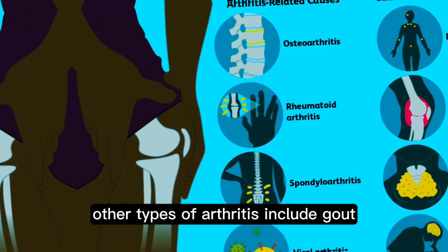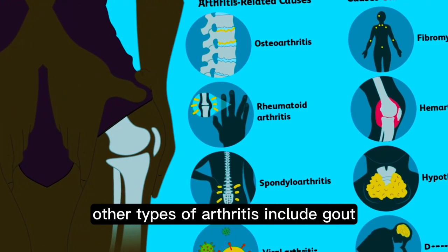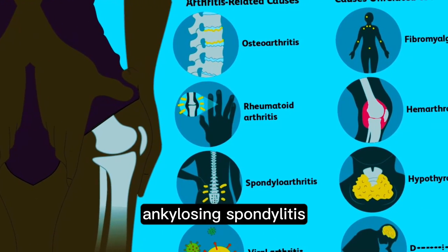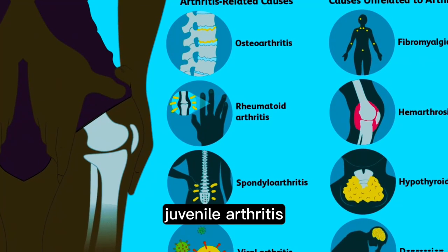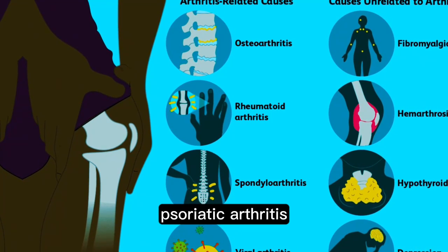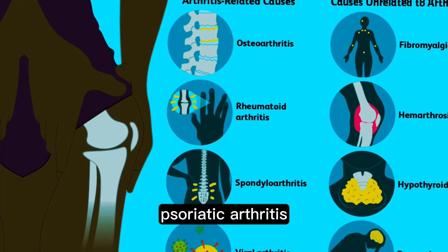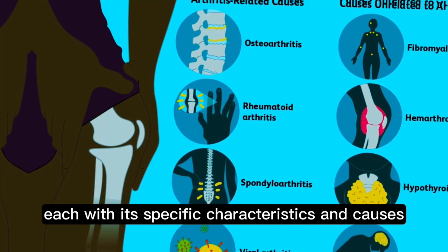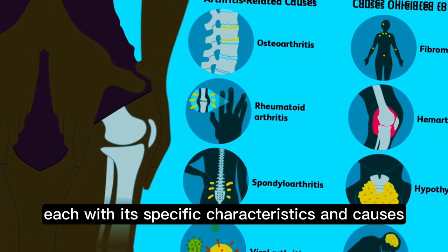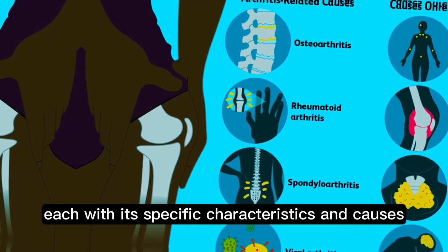Other types of arthritis include gout, ankylosing spondylitis, juvenile arthritis, psoriatic arthritis, and many more, each with its specific characteristics and causes.